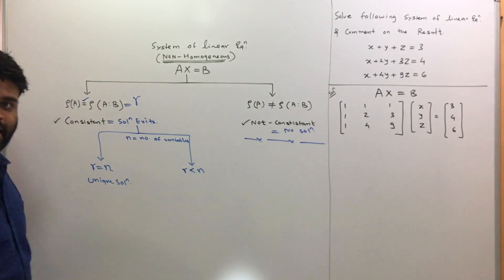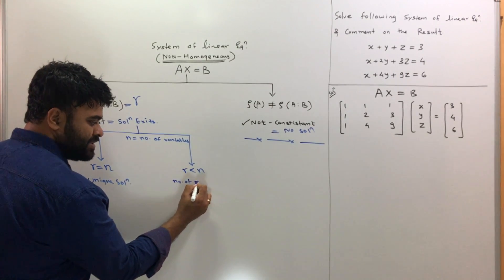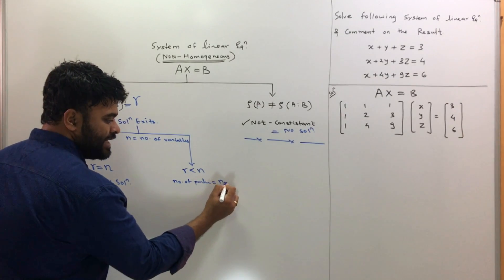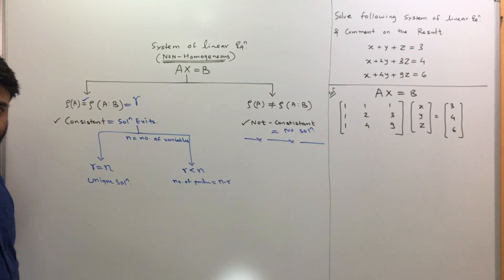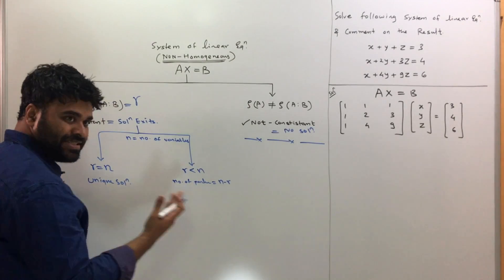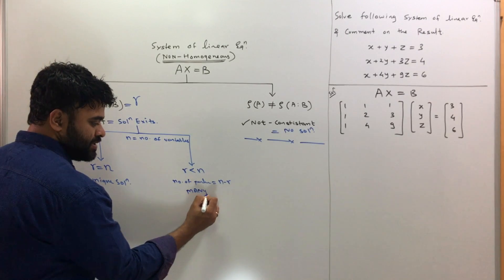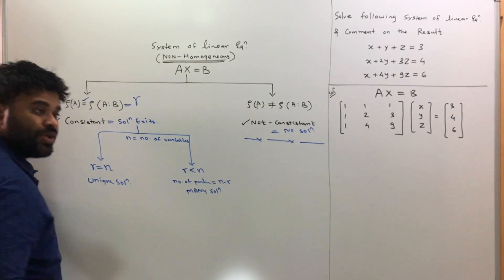The other case here is R can be less than n. If R is less than n, you find out a number of parameters, which is just the difference of n and R. Once you find the number of parameters, you can find out the solution as well. You basically have many solutions.